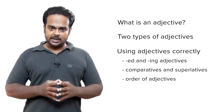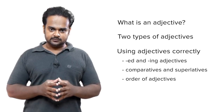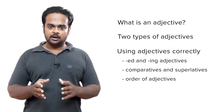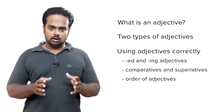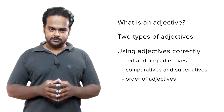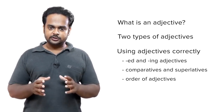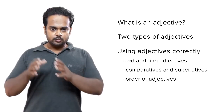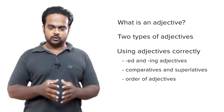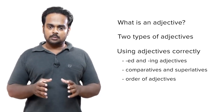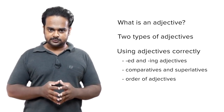We will look at three areas: ed and ing adjectives, comparatives and superlatives, and the order of adjectives — that is, when you have more than one adjective in a sentence, which should you put first, second, etc. So we'll talk about avoiding errors in these three areas.